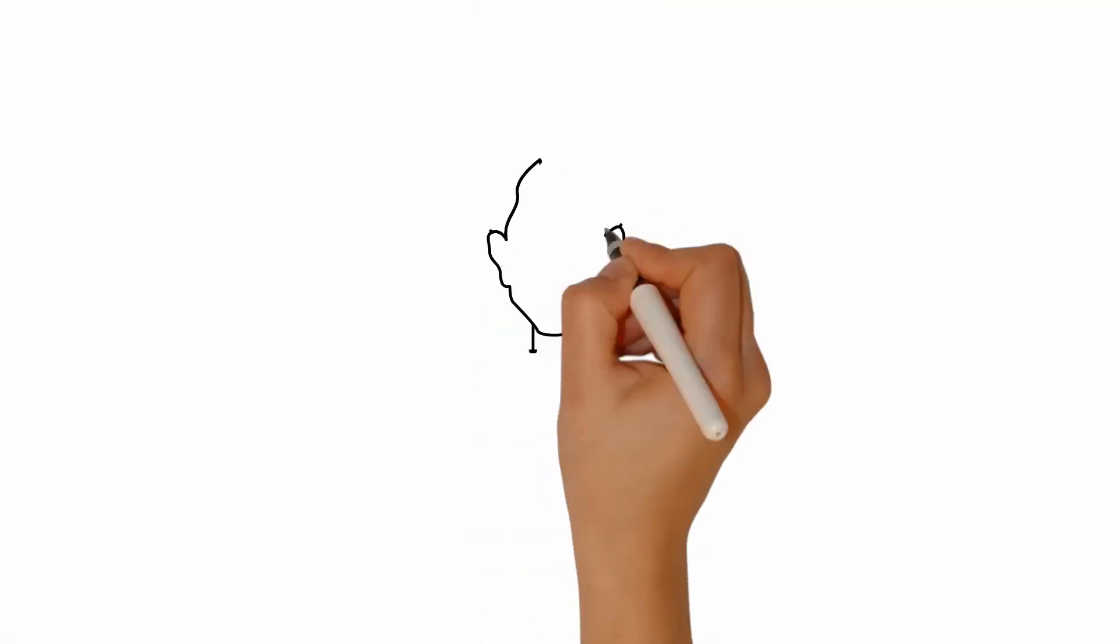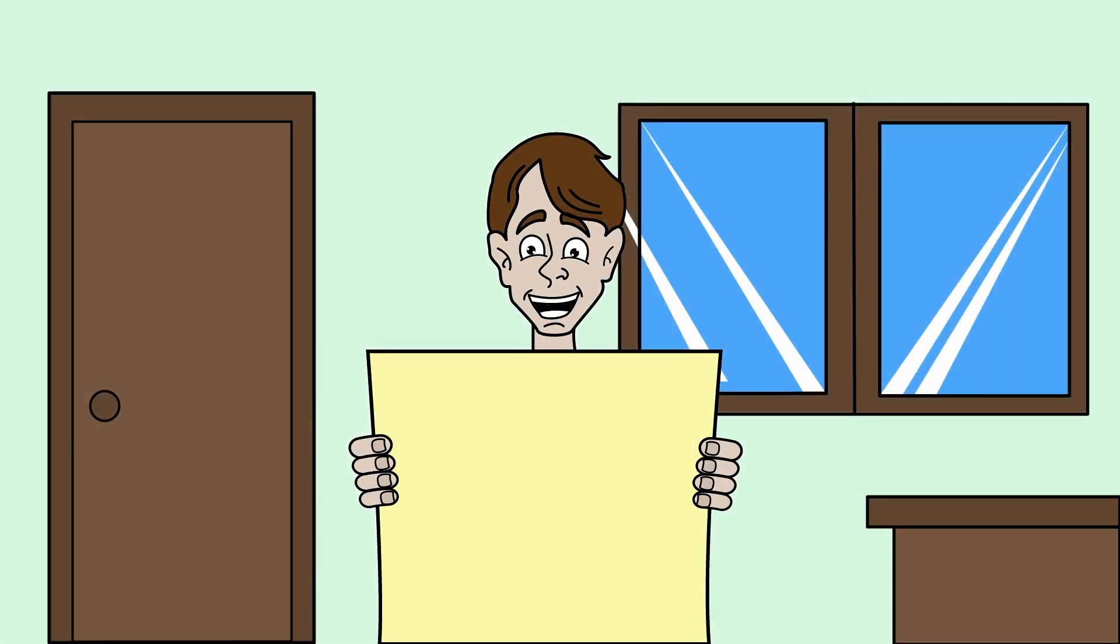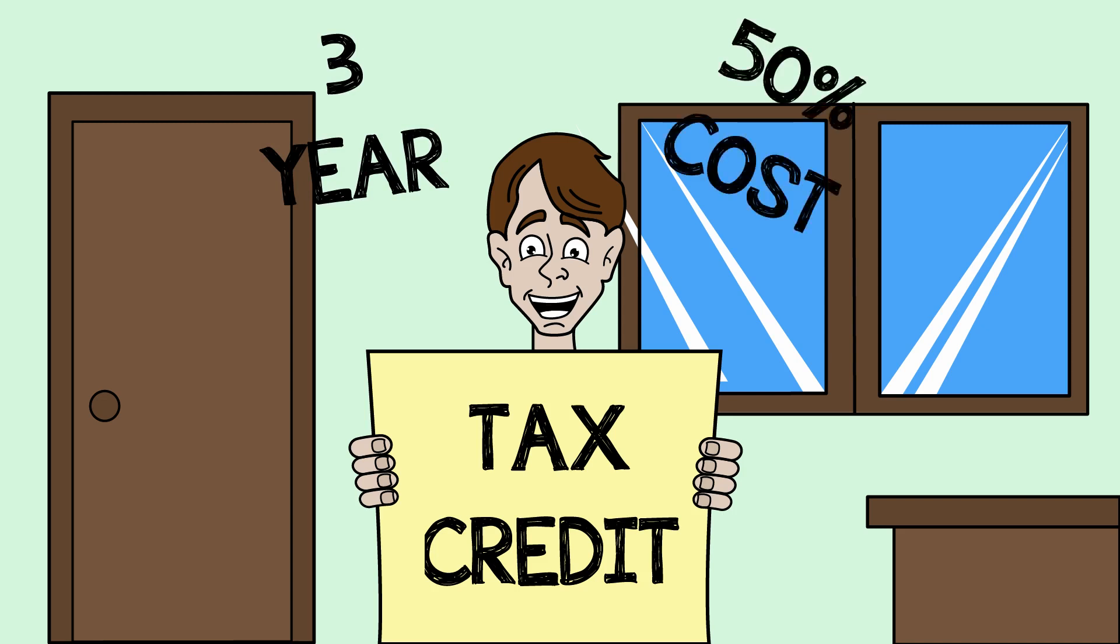And oh, by the way, did you know that the federal government provides a tax credit? That's right, a tax credit for businesses who choose to set up a retirement plan. This credit is for the first three years, 50% of the startup cost up to a maximum of $500 per year, and was created to incentivize small businesses to set up retirement plans for their employees.